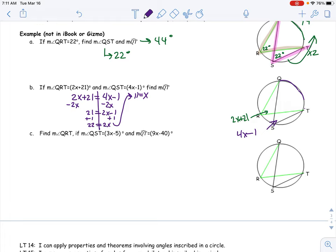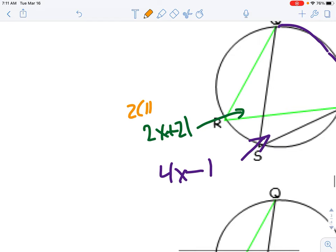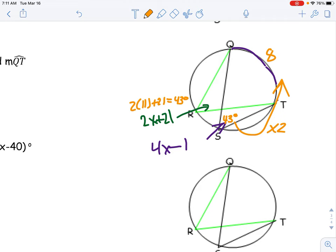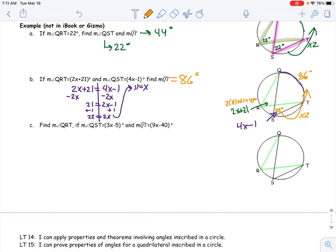Alright, so a bunch of math happens and x equals 11. Let's just plug this back in. If I get 2 times 11 plus 21, I'd have 43 degrees. Similarly, right here that'd be 43 degrees as well. To find the measure of QT, just times it by 2, bada bing bada boom, 86. Inscribed angles are half the measure of the intercepted arc, so just times it by 2.